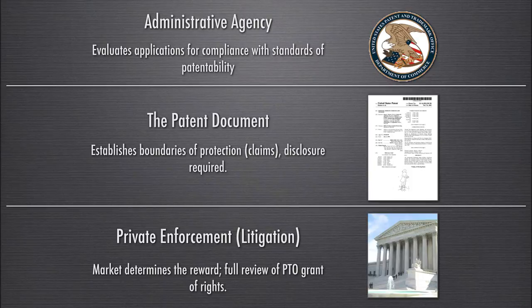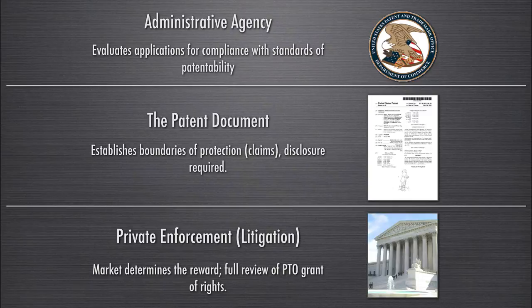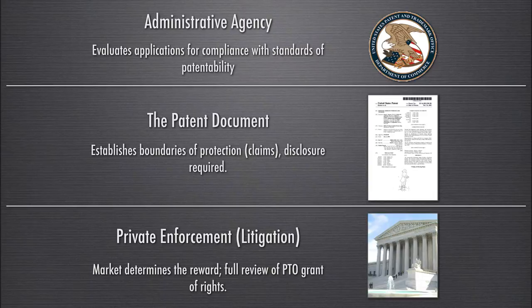The patent document is critical to everything. Everything important about a patent can be found in the patent document. The document establishes the boundaries of protection through the patent claims, discloses what the invention is and how it relates to other inventions including the prior art. The disclosure is required. The patent document is sort of the end stage or work product of the administrative body.